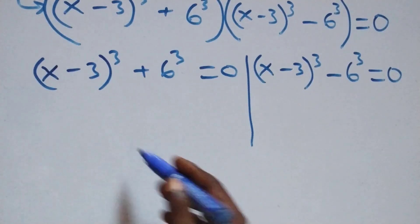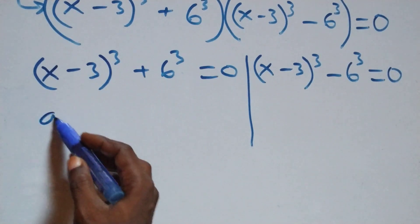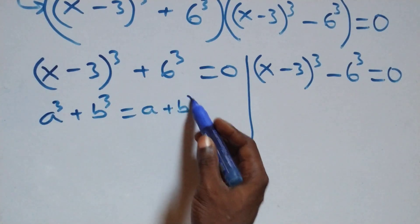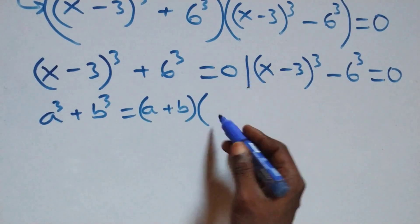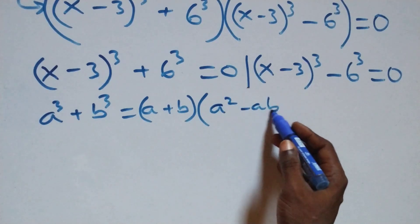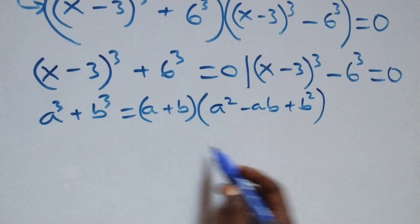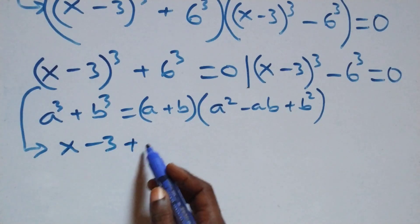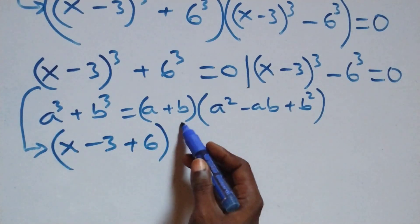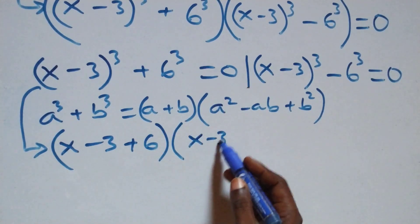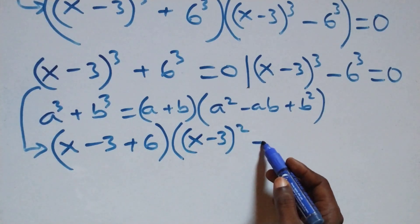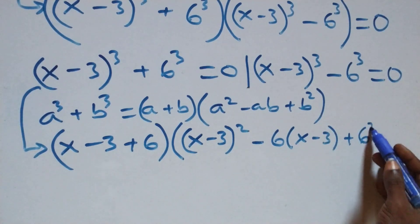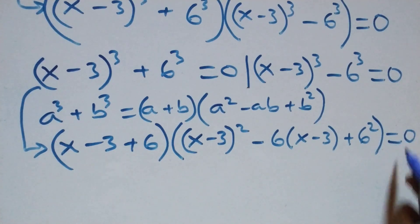Solving from the first case: this follows the sum of cubes, a^3 plus b^3, which equals (a plus b) times (a squared minus ab plus b squared). Here it becomes (x minus 3 plus 6) into brackets, times open bracket (x minus 3) squared minus 6 times (x minus 3) plus 6 squared, close brackets, equals 0.